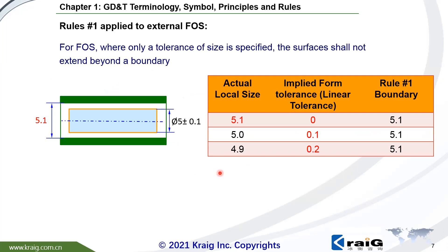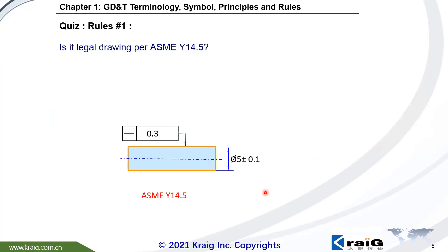Here is the relationship between the local size and form tolerance. If the local size is at MMC size, no form tolerance is allowed, such as straightness. If the local size is 5.0, you are allowed 0.1, and you are still within Rule No. 1. The local size 4.9 is the smallest size — the part will get a maximum deviation of 0.2, still within the Rule No. 1 boundary. Rule No. 1 will control the form tolerance and it is a default requirement.